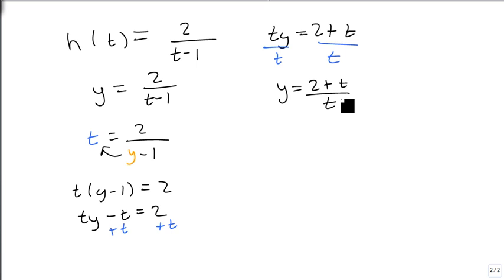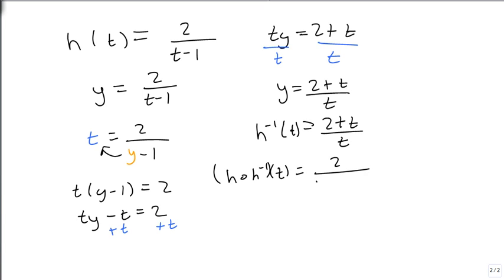Now when we compose this, this gets a little bit tricky. So again, I'm going to take, because this is h inverse of t now, and I'm going to plug my inverse into my original. So I'm going to get h composed with h inverse of t equals 2 over 2 plus t over t minus 1.